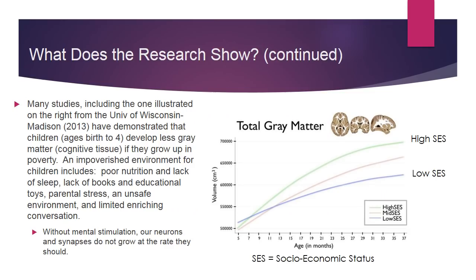Many studies, including one from the University of Wisconsin-Madison in 2013, have demonstrated that children ages birth to four years old develop less gray matter — cognitive tissue — if they grow up in poverty. An impoverished environment includes poor nutrition and lack of sleep, lack of books and educational toys, parental stress and unsafe environment, and limited enriching conversation. Without mental stimulation, our neurons and synapses do not grow at the rate that they should.